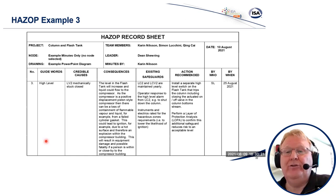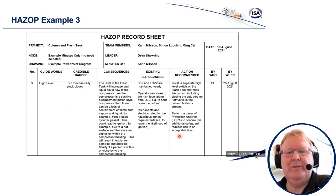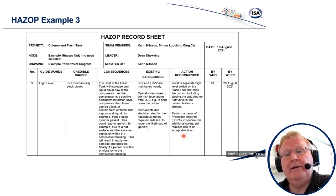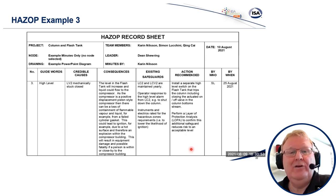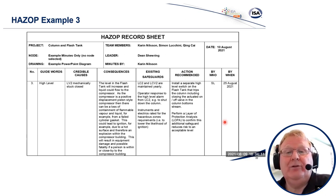It's a very simple technique, but when done well — identifying all possible credible causes for deviations of the design intent, exploring consequences systematically, assessing safeguards and their adequacy — the chances of missing something are very low indeed. That's fundamentally the reason why the HAZOP technique is so flexible and so successful: you can apply that methodology to any process that exists. When done well, this technique does save lives.